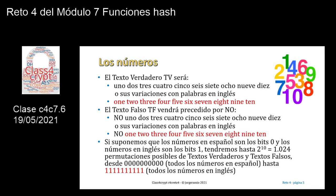Para hacerlo más sencillo y poder hacer un seguimiento, los números en español estarán relacionados con los bits igual a 0, y los números en inglés estarán relacionados con los bits igual a 1. Como tendremos 10 números en español y en inglés, tendremos 2 elevado a 10, es decir, 1024 permutaciones posibles de textos verdaderos y de textos falsos, desde un conjunto de 10 ceros hasta un conjunto de 10 unos.